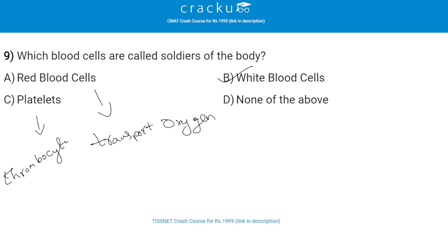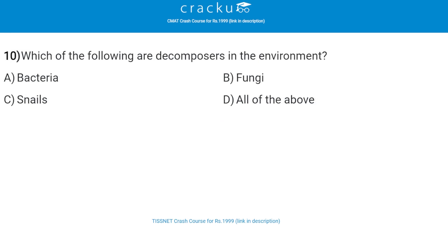The function of red blood cells is to transport oxygen. Platelets are also called thrombocytes. Next, which of the following are decomposers in the environment? The correct answer is all of the above — bacteria, fungi, and snails are the decomposers in the environment.